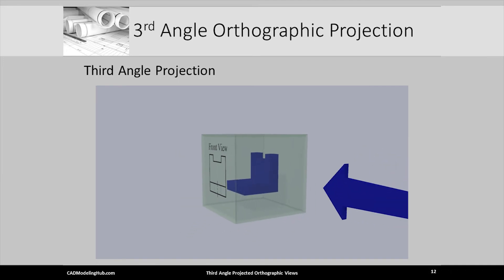Positioning ourselves so that we are normal to the right side of the glass cube, again we highlight the surfaces that are visible and project them forward onto the right wall of the glass cube. We label this view the right side orthographic view.